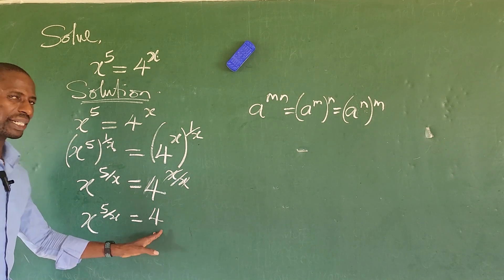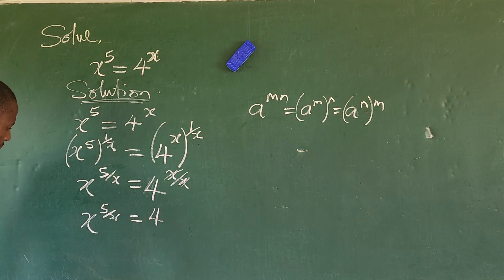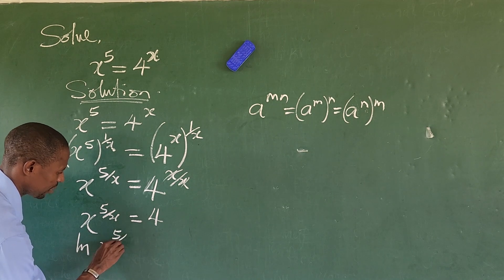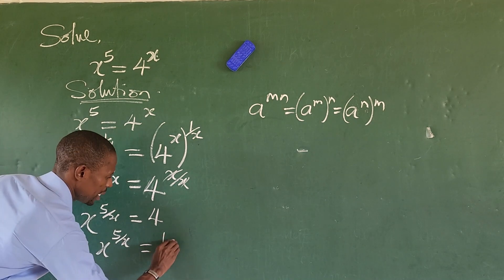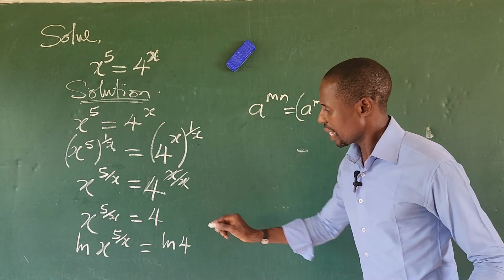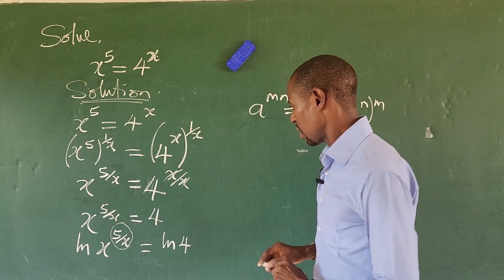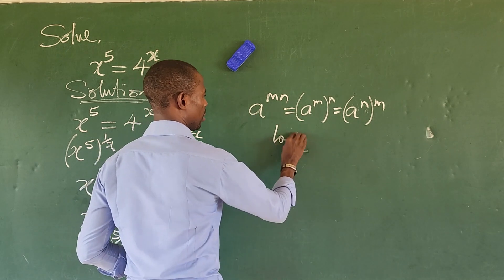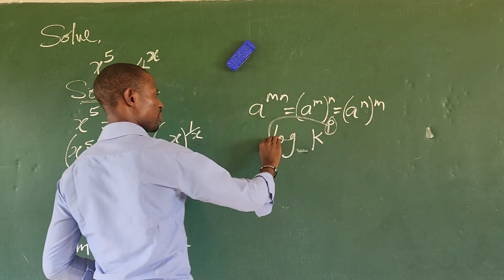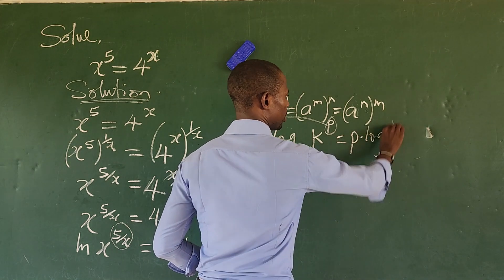At this point we introduce our natural log. So if we take the natural log of both sides, this gives us ln of x to the power of 5 over x, equal to ln of 4. Now this is an exponent again. According to the law of logarithms, if you have log of k to the power of p, you move this exponent forward to give p times log k.